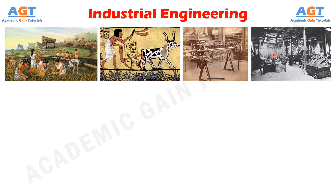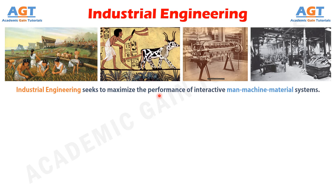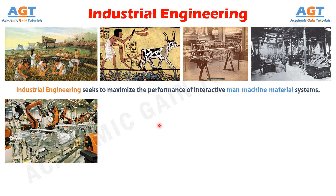The continued pursuit of higher productivity gave birth to two disciplines: industrial management and industrial engineering during the mid-20th century. Industrial engineering seeks to maximize the performance of interactive man-machine-material systems. Systems integration cuts across boundaries of functions within organizations and across boundaries of organizations that together make a whole enterprise.